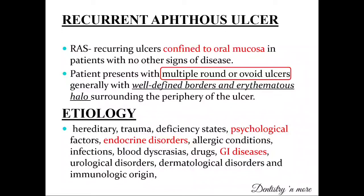The etiology of recurrent aphthous ulcers may include hereditary reasons, traumatic reasons, deficiencies such as vitamin B deficiencies or iron deficiencies, psychological factors, endocrine disorders, allergic conditions, infections, blood dyscrasias, drugs, GI diseases, urological diseases, dermatological disorders, and immunological origins.